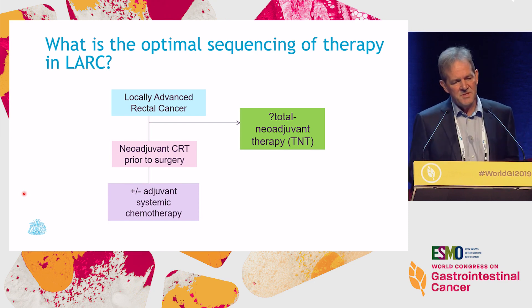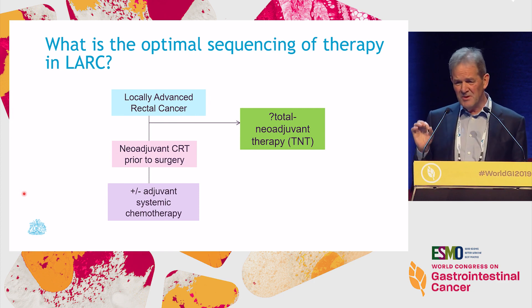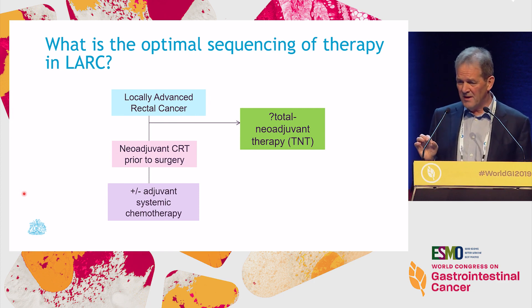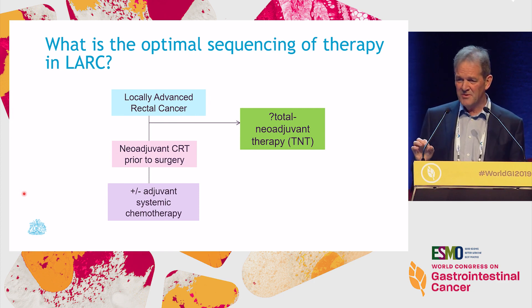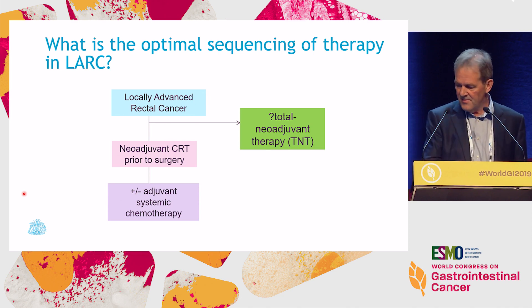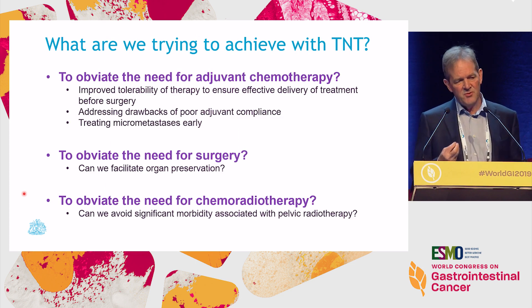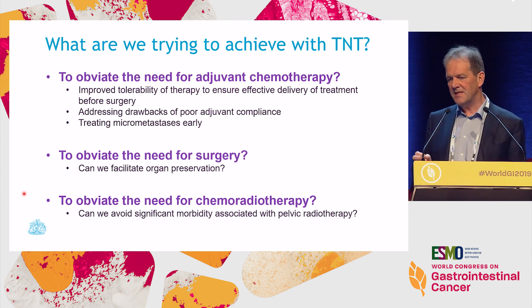When it comes to optimal sequencing, this is a very good question. You do need to be quite clear in your own mind that systemic chemotherapy is not that good in colorectal cancer — it's a useful treatment, but it has its limitations. And you want to ask the question: what are you trying to achieve with TNT?